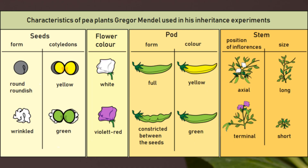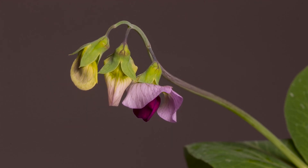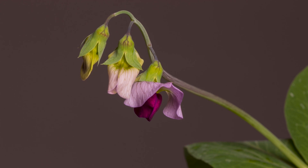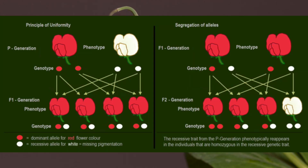Mendel's method was simple in theory but tedious in practice, which is why his work took years to complete — about six to seven years from start to finish. He planted his peas out in a large field, then recorded the pea flower colour, shape, form and so on. At the end of the season he collected seeds to plant out again next time, roughly done once a year.